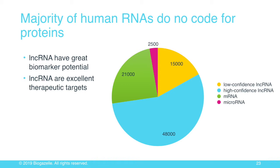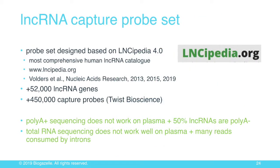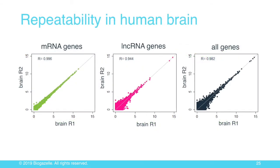If you work with low-abundant RNAs in liquid biopsy, which is already lowly concentrated and fragmented, you really need enrichment to pull out that low signal from the background. We designed probes against LNCipedia — probably the most comprehensive human lncRNA catalog, published in several papers in Nucleic Acids Research — resulting in about 450,000 probes synthesized by Twist, targeting about 52,000 long non-coding RNA genes. We first validated on human brain RNA and were pretty impressed: we saw good reproducibility and detected many genes over a large dynamic range.